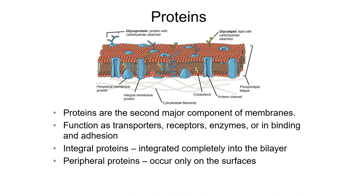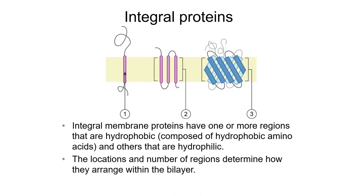We also have proteins as a major component of our membranes. Proteins are really important - they can be transporters, receptors, enzymes, or they might bind or adhere to other cells or proteins. We have a couple of different kinds. Integral proteins are actually integrated completely into the bilayer. Peripheral proteins are only on the surface of the membrane; they don't go the whole length or width of the membrane like integral proteins do.